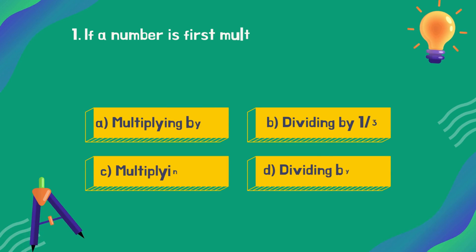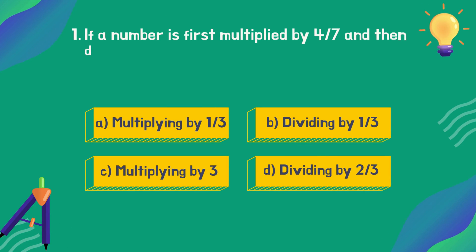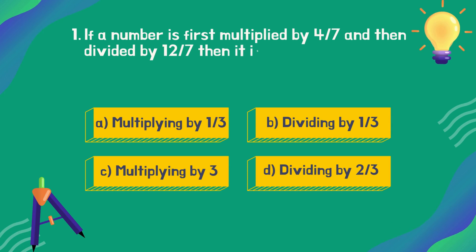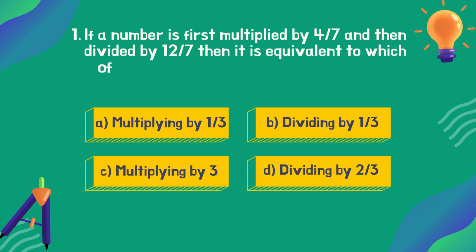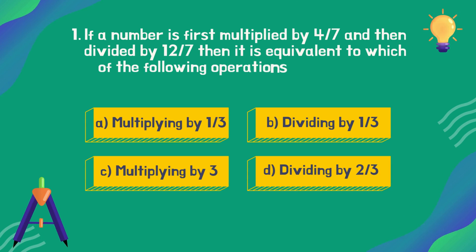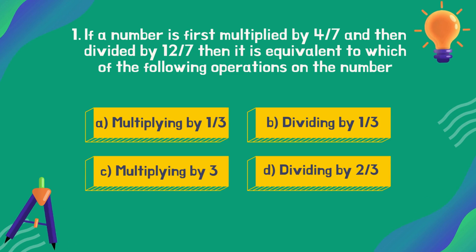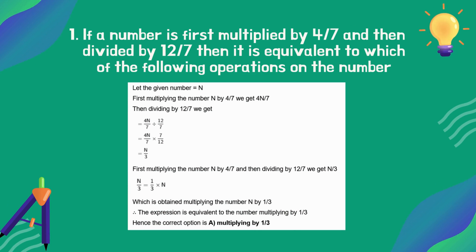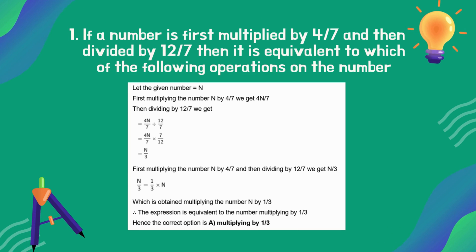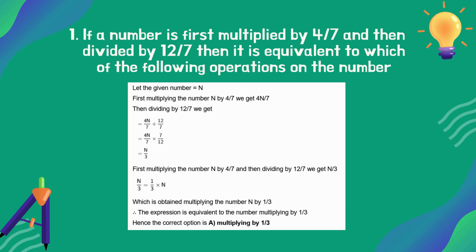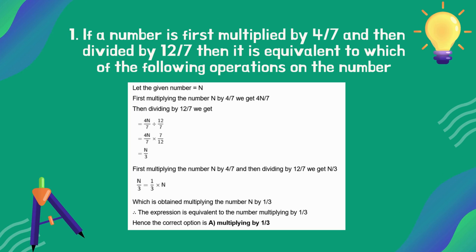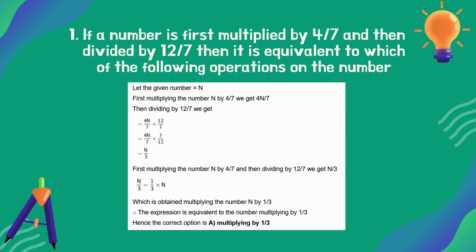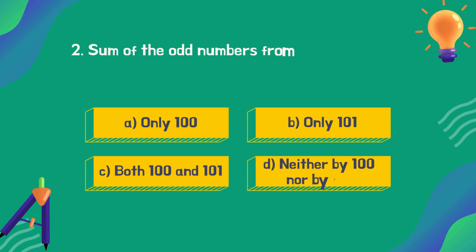A number is first multiplied by 4/7 and then divided by 12/7. It is equivalent to which of the following operations on the number? The correct answer is option A: multiplying by 1/3.